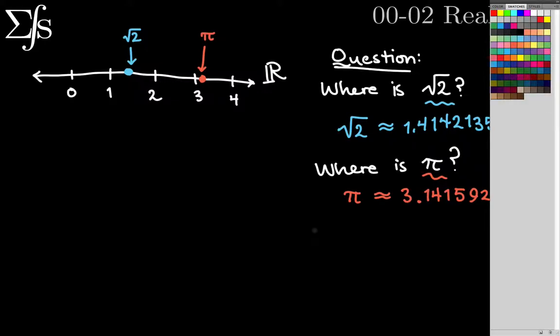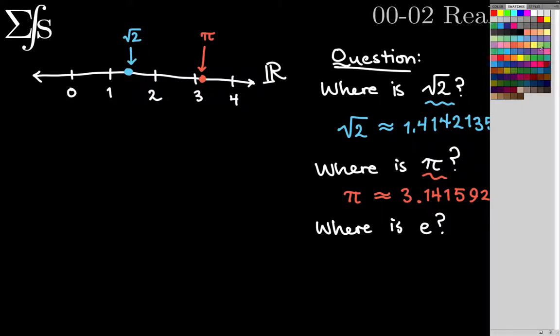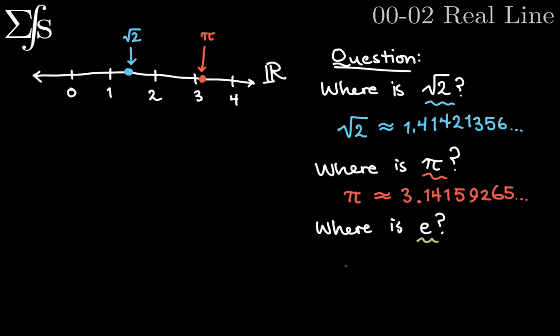And let's just do one more. So where is e on this real line? We'll use a green for that. So e is approximately 2.7182818. I guess that's enough digits as well. It's 2.7 something. So that means it's between 2 and 3. And it's pretty close to 3, but it's about halfway between 2.5 and 3. So let's say it's about here. It's e. So it's almost 3 quarters of the way between 2 and 3.